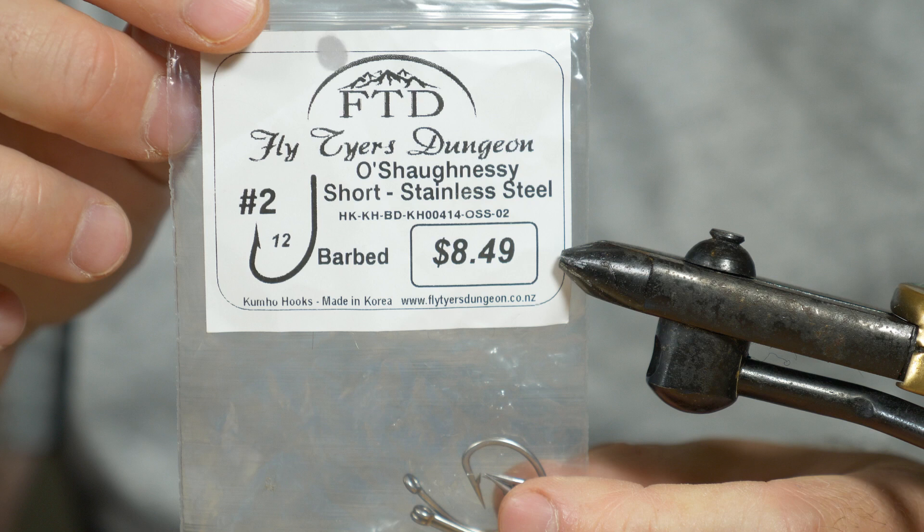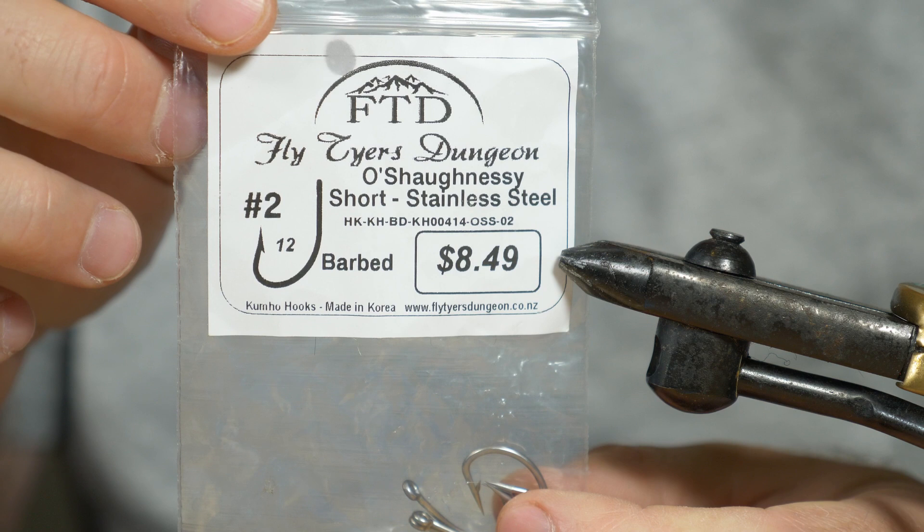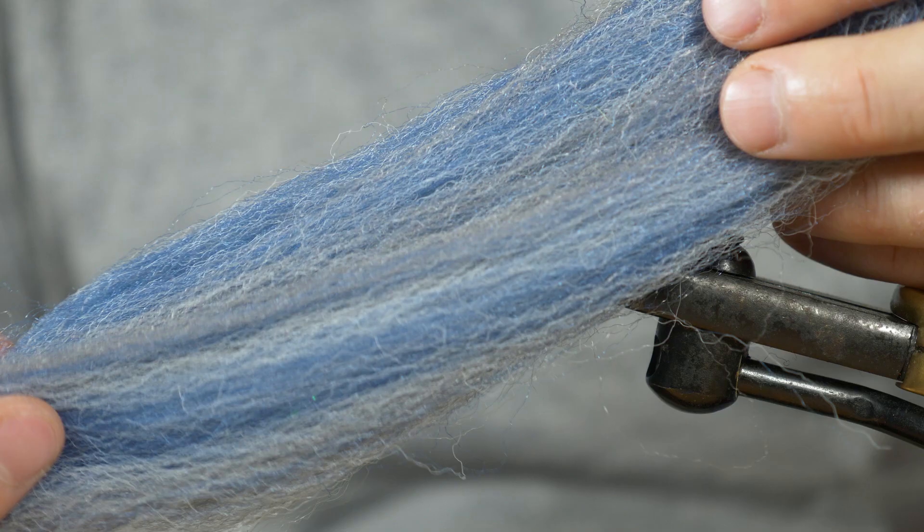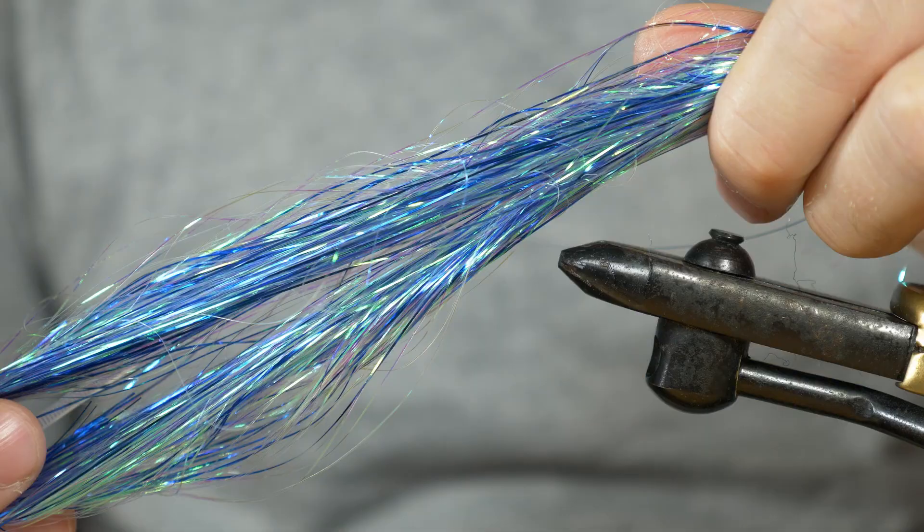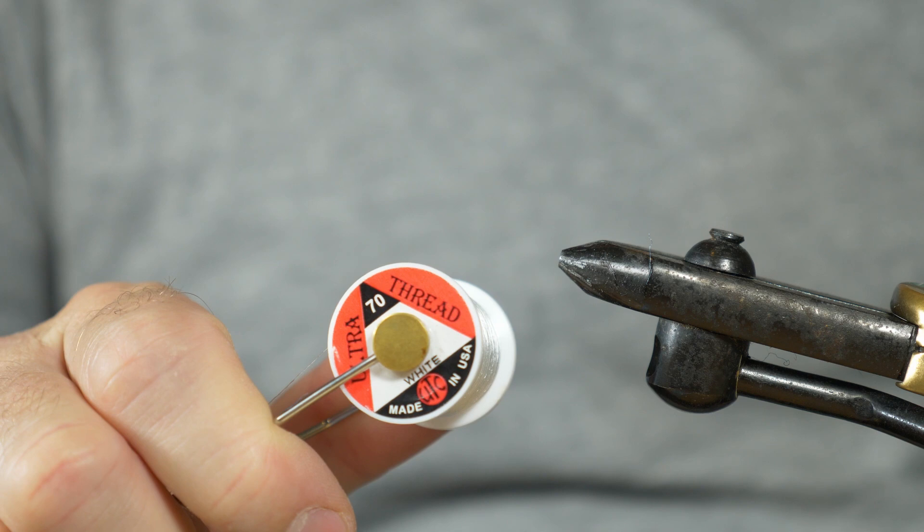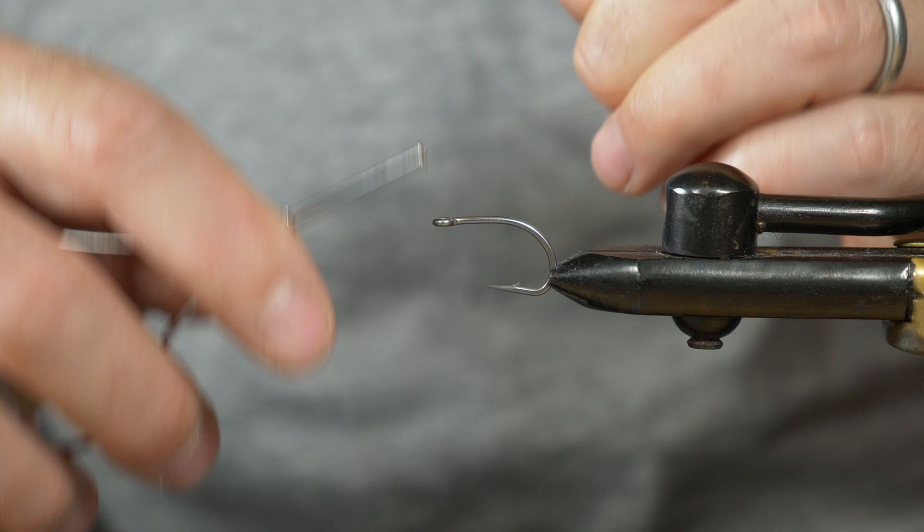We'll be tying this fly on size 2 Kumo stainless steel hooks, short shank from Fly Ties Dungeon, available from I Love Fly Fishing. We'll also be using Loon UV Clear thick fly finish to create the body, Congo Hair Baitfish Blend in Dun Shad, H2O flash in pearl baitfish color, some 6mm silver fish eyes, white thread, and orange or red floss.